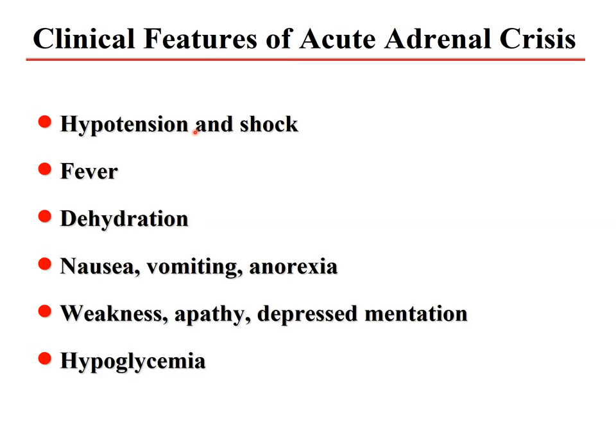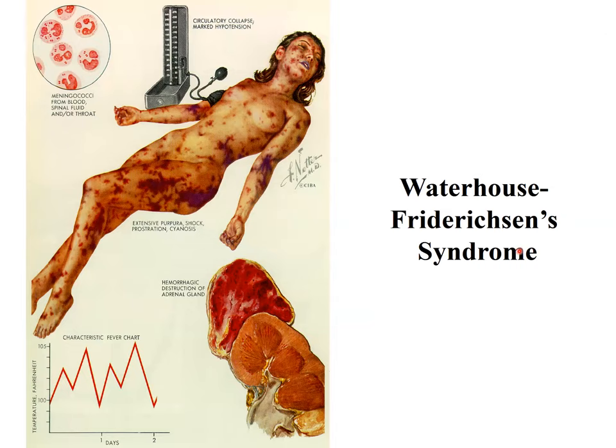A famous condition is Waterhouse-Friderichsen syndrome, where a severe meningococcal infection causes the toxins to produce hemorrhagic necrosis and destruction of the adrenal cortex. The patient develops relative hypotension, purpuric suffusion all over the body, and very high fever — a life-threatening situation.